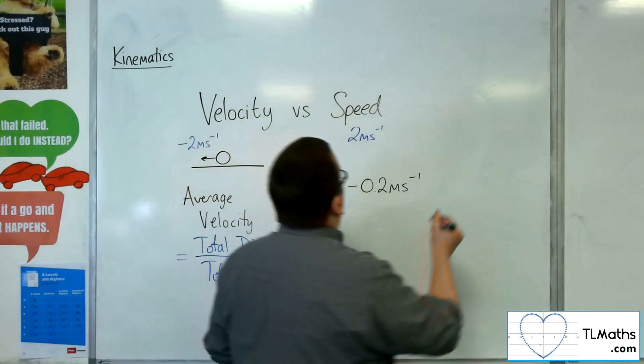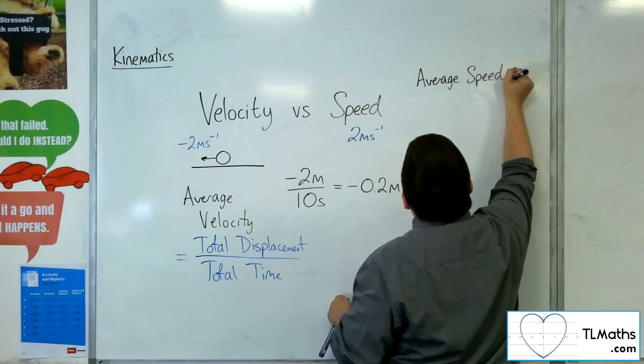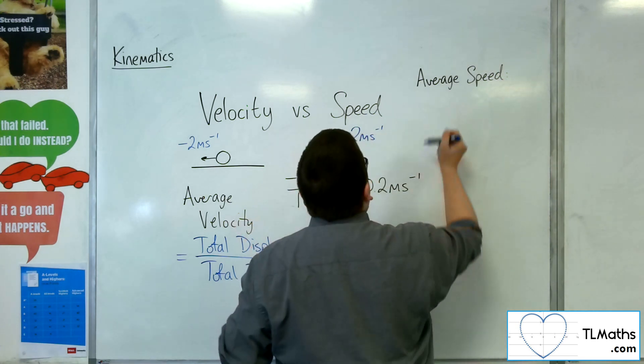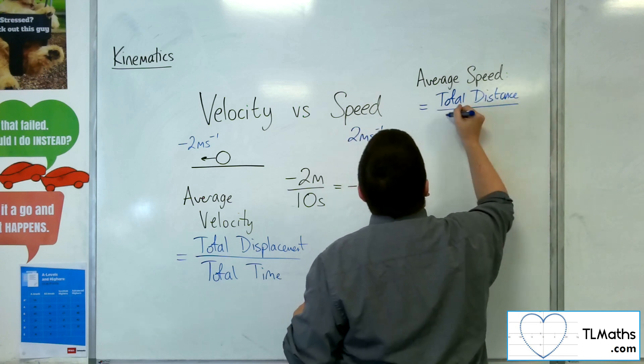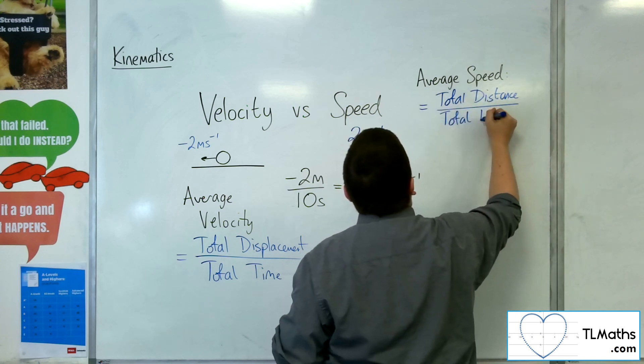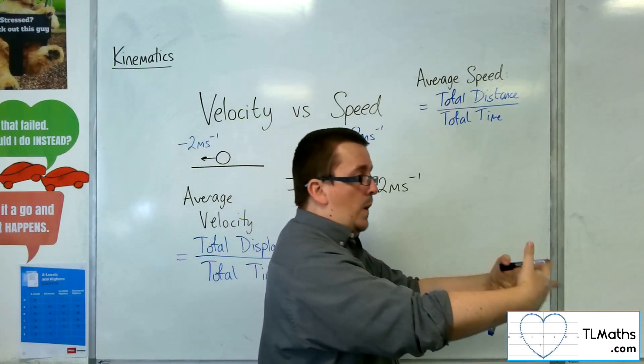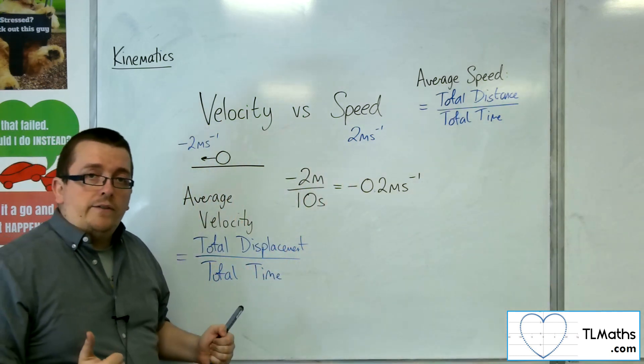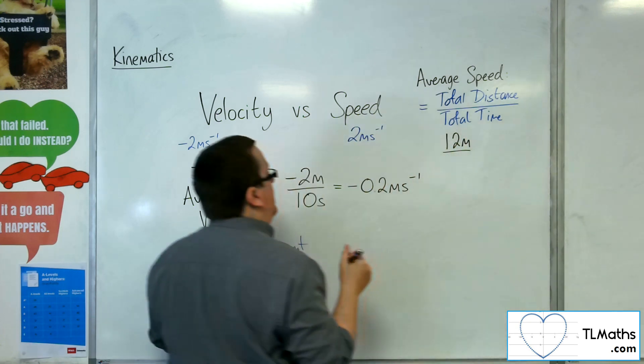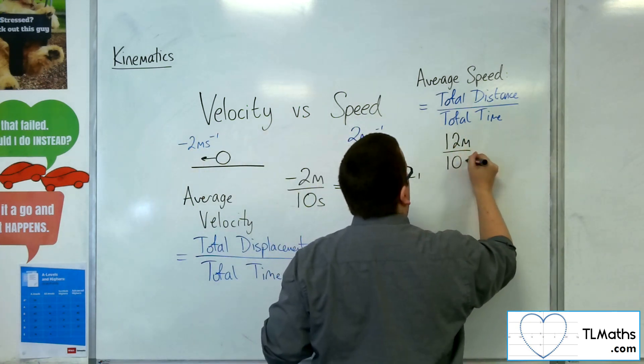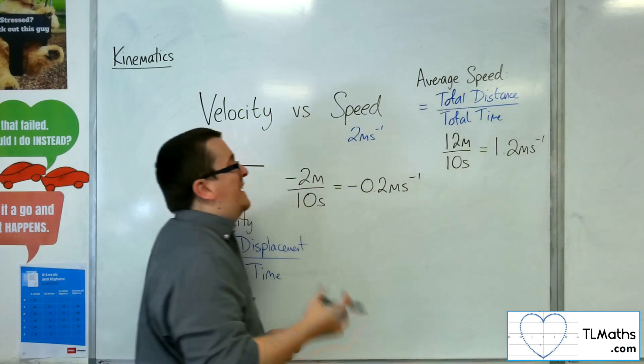Whereas if we were to look at average speed, then for that we'd be looking at the total distance that had been traveled, divided by total time. So in the example that we had with this person walking 5 meters this way and then 7 meters back, they've actually covered 12 meters in total. And if they'd done that in the total time, then we'd be looking at 1.2 meters per second as the average speed.